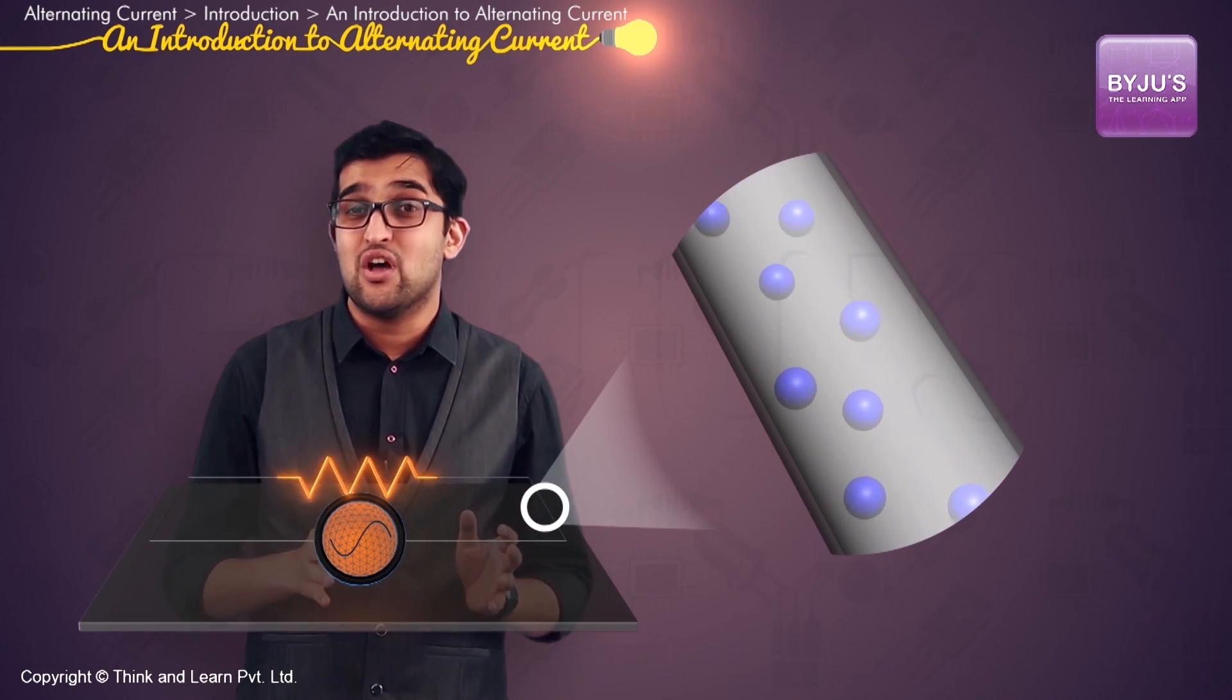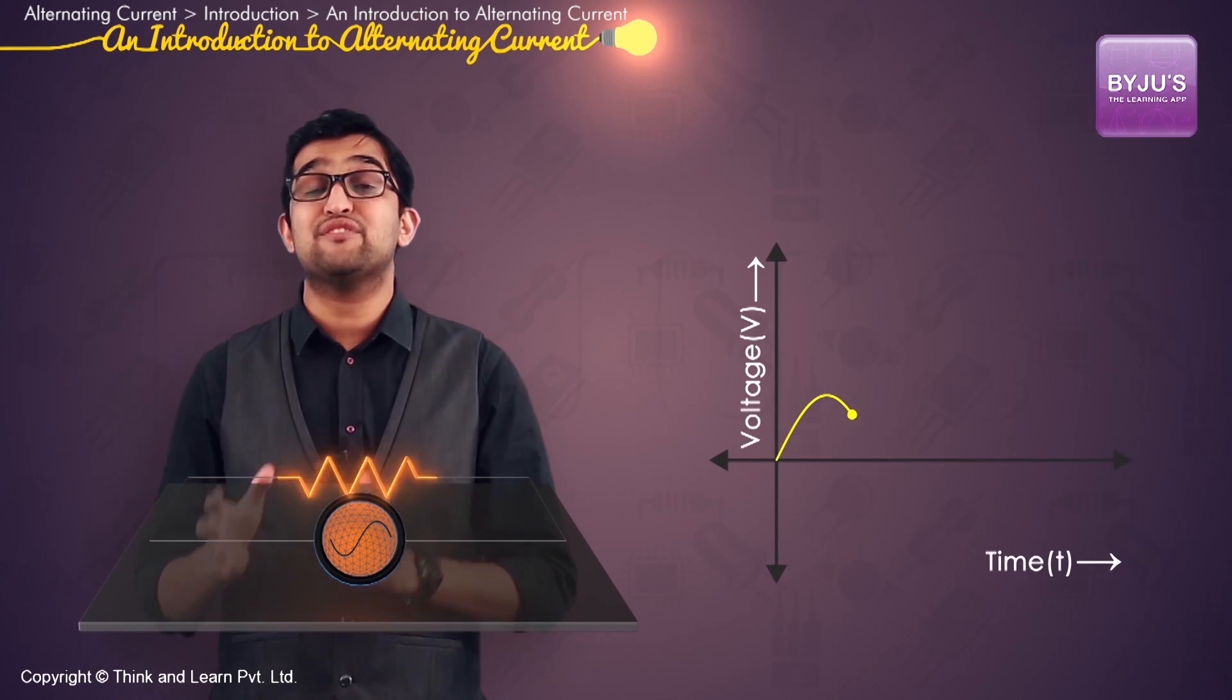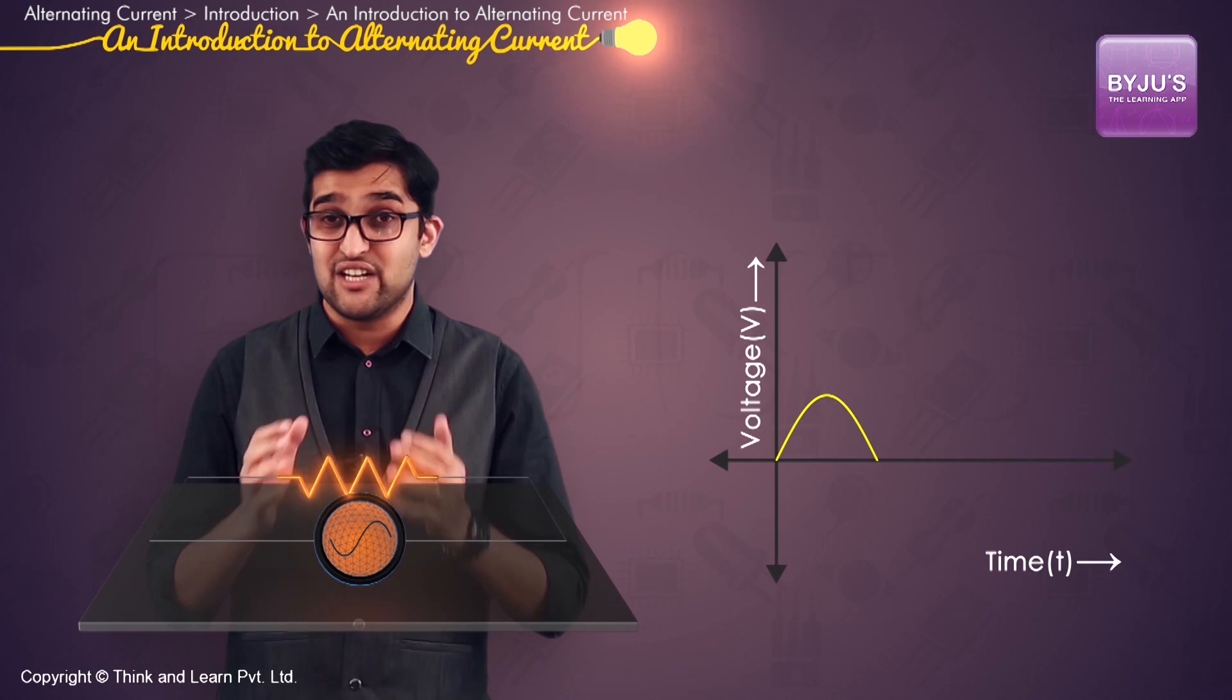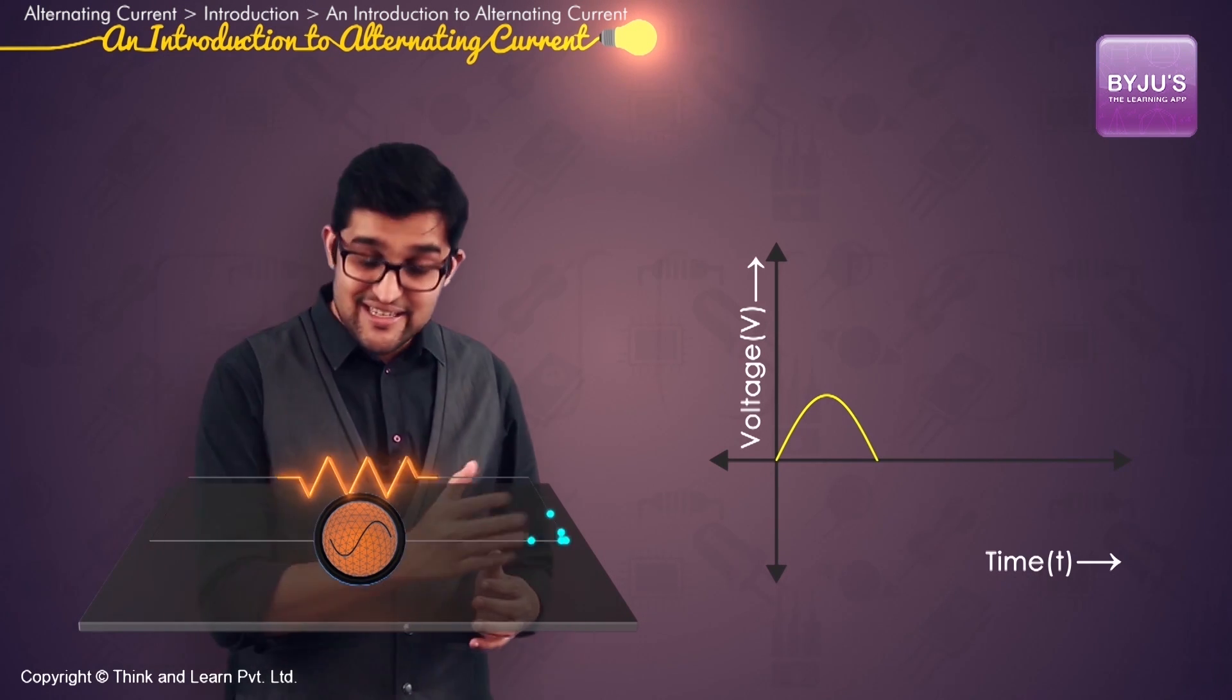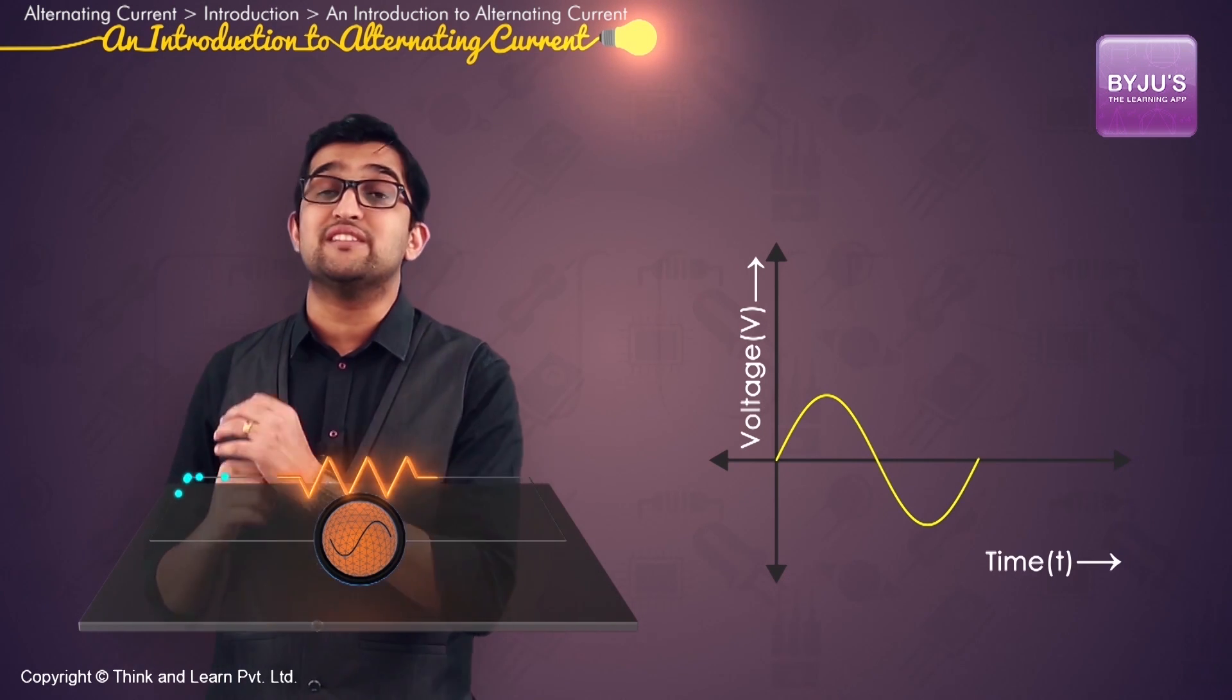The electrons always move back and forth. During the positive half cycle of the sine wave, the electrons will move in this direction. And in the negative half cycle, they will move in the opposite direction.